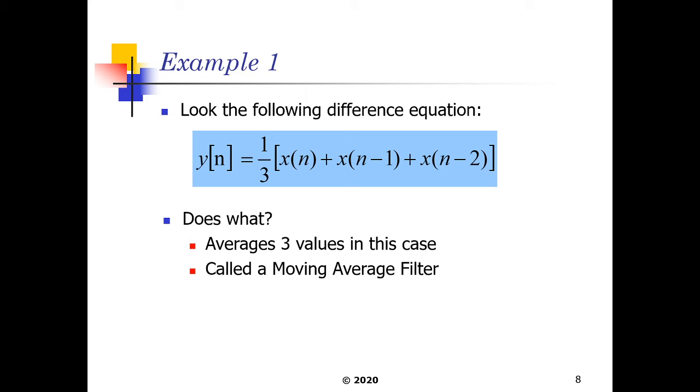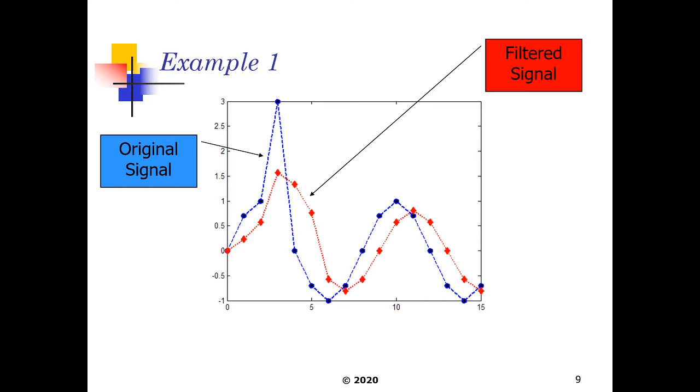We're going to apply this filter equation or this filter difference equation to the previous signal that we just observed. If we apply it to that signal, the original signal here is seen as the blue line which had our nice noise spike. But the filtered signal here, it reduces that noise accordingly and gives us a more accurate representation of what the original signal is supposed to look like.